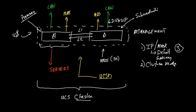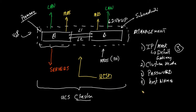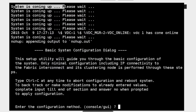The cluster mode configuration is also going to require me to specify a password, and then ultimately I'm going to assign a hostname — and that's pretty much going to be the gist of the configuration on Fabric Interconnect A. That's going to leave me Fabric Interconnect B. When it comes to FI-B, pretty much all I'm going to do is give it a name and tell it to attach to the cluster. This device is going to auto-detect the primary and pull its configurations from it.